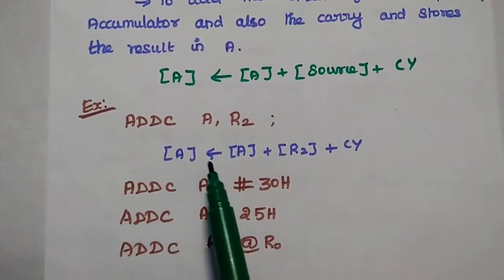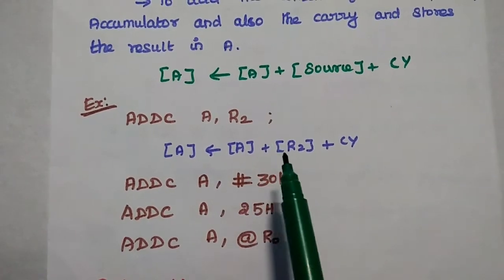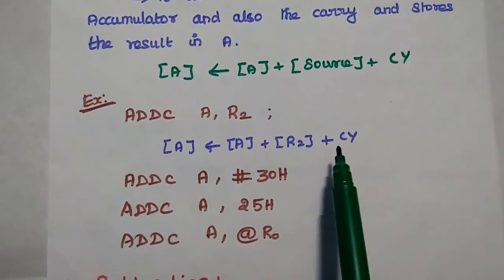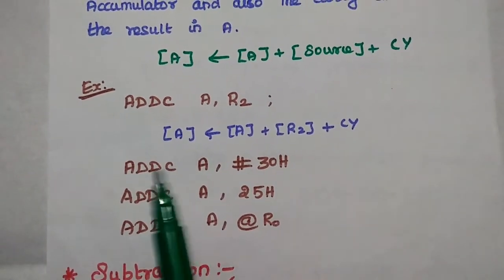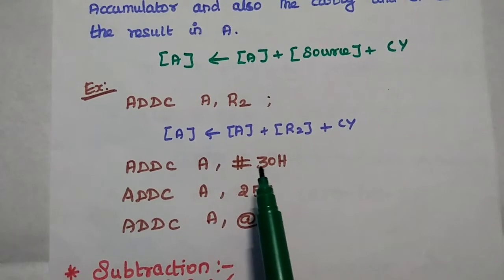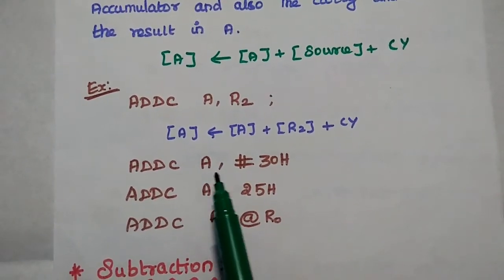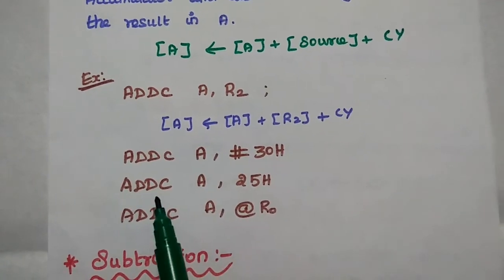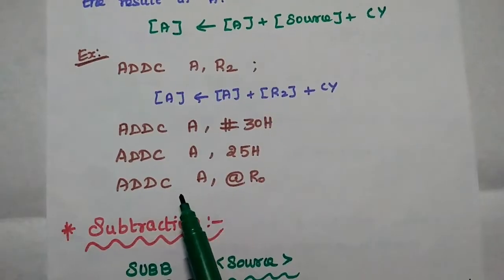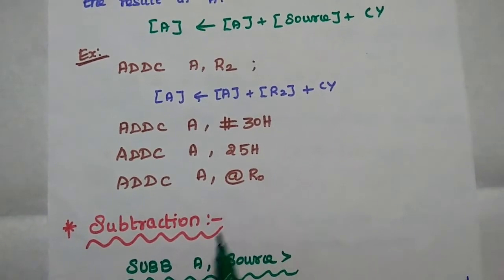Examples of ADDC: ADDC A, R2 means add the contents of accumulator and R2 register and also the carry. ADDC A, #30H — here the immediate data is added with the accumulator content and also the carry. ADDC A, 25H uses direct addressing mode. ADDC A, @R0 is indirect addressing mode.